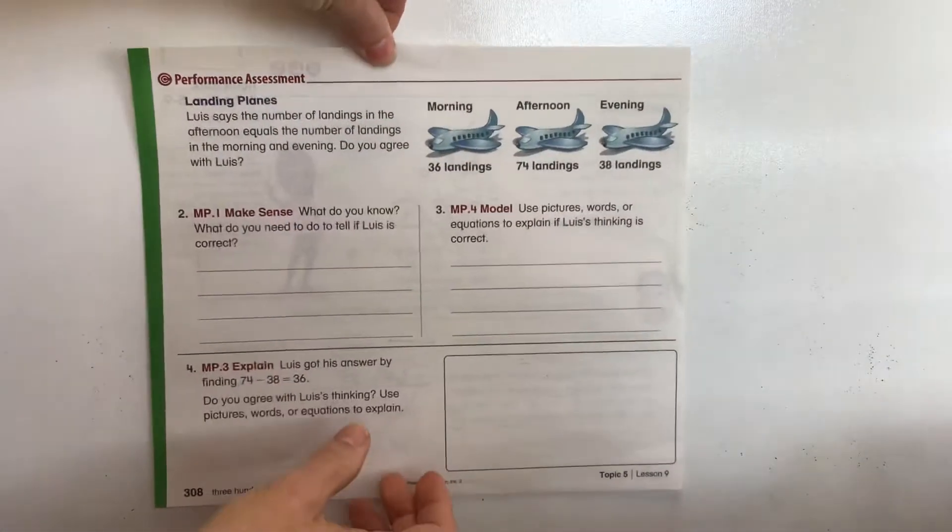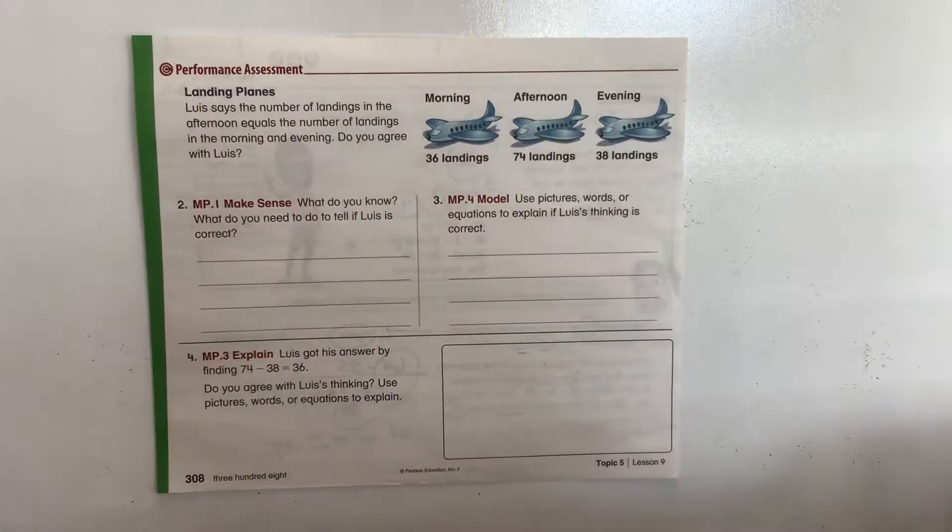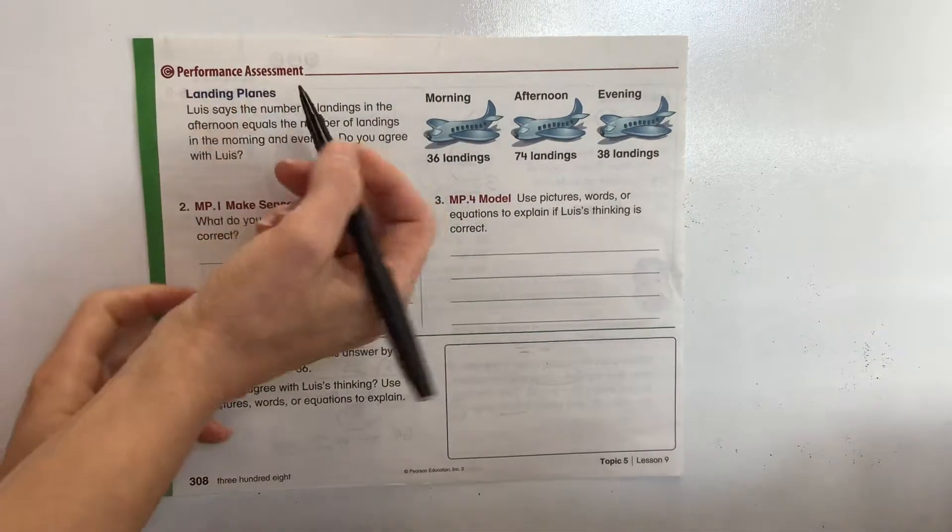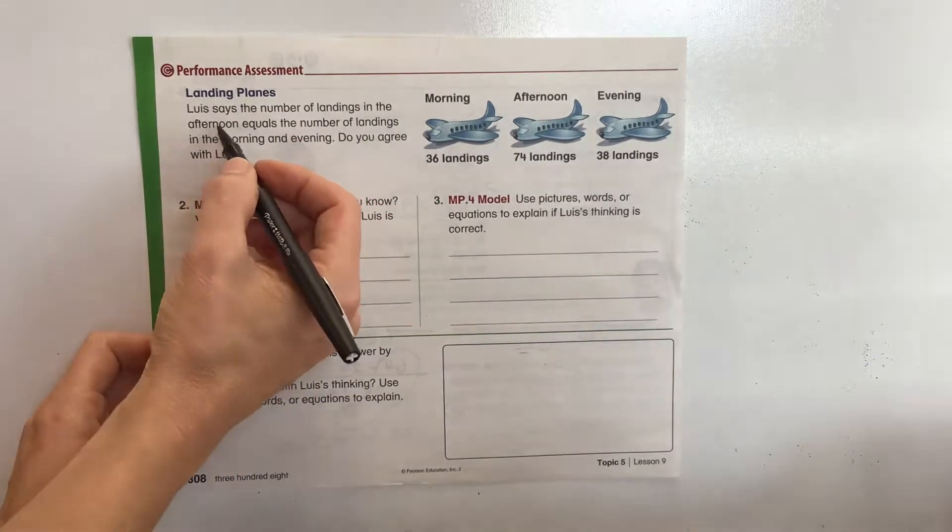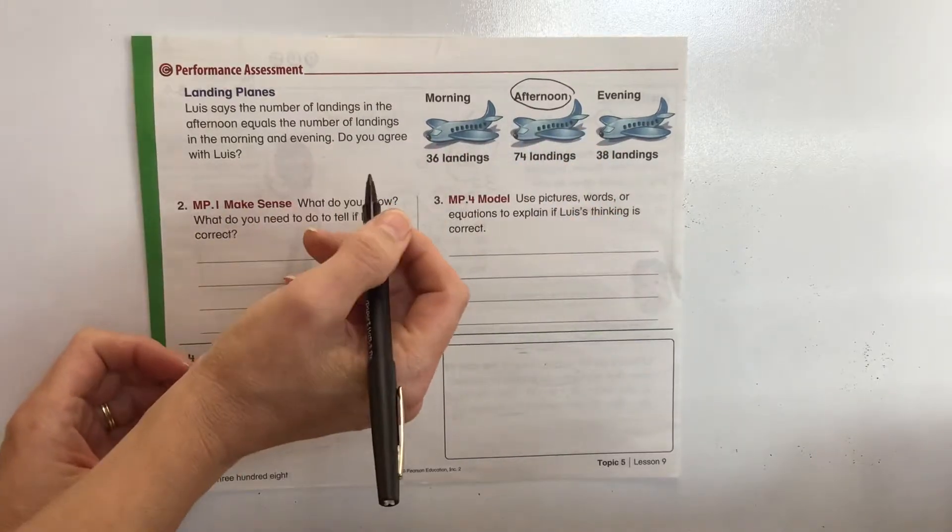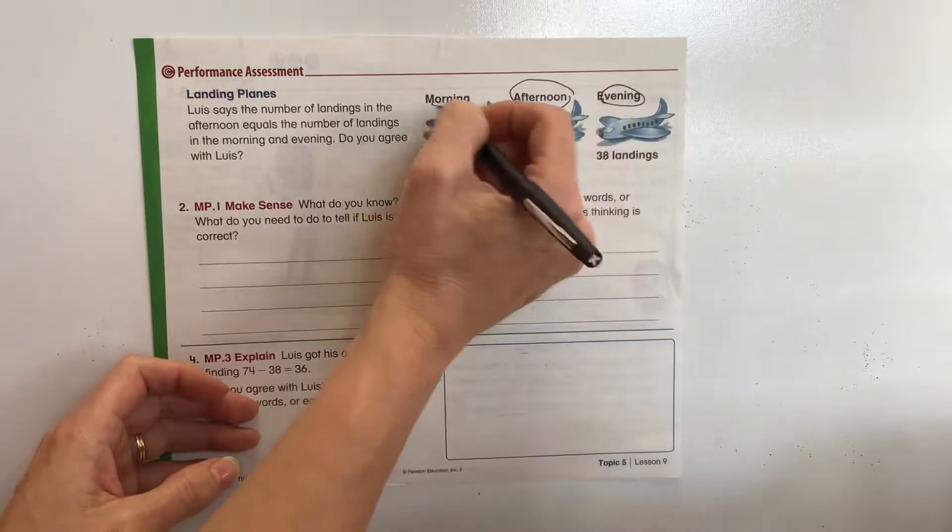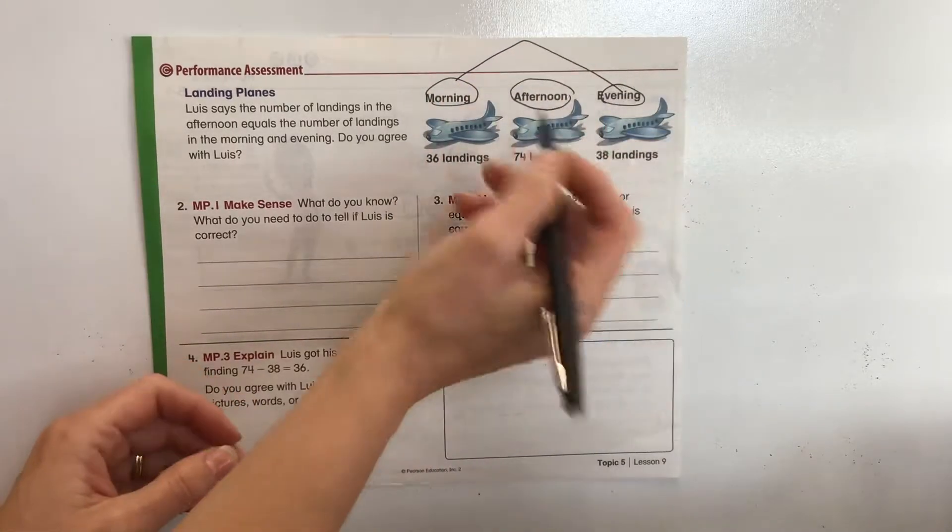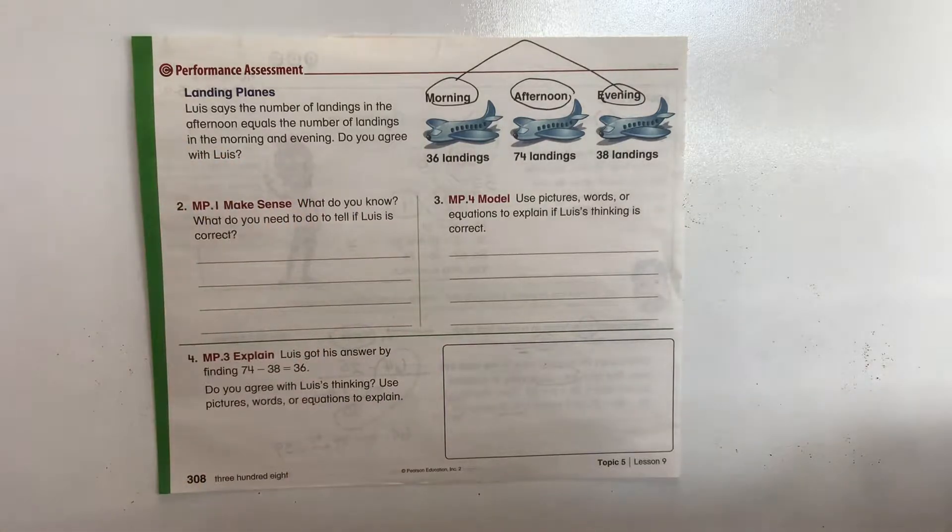Again, there's more than one way to do it, but we're just taking a look at the way the sample students have done it. Landing planes. Louise says the number of landings in the afternoon equals the number of landings in the morning and evening. So our morning and evening will be the same amount as the ones in the afternoon. Do you agree with Louise?